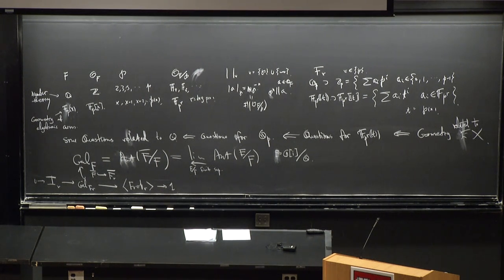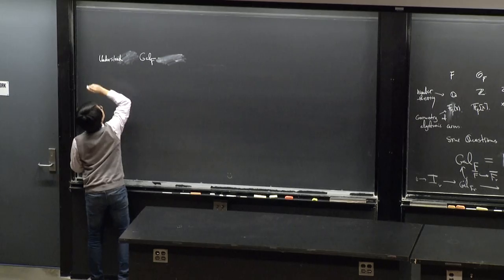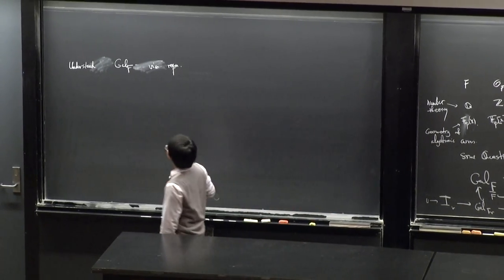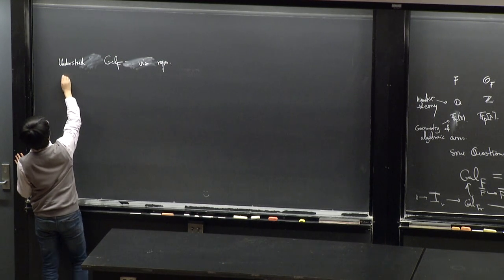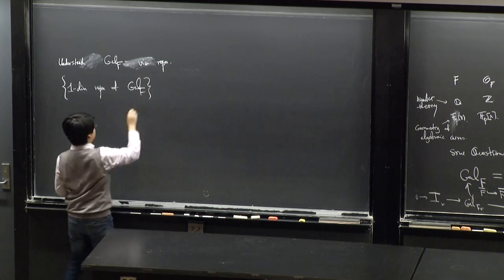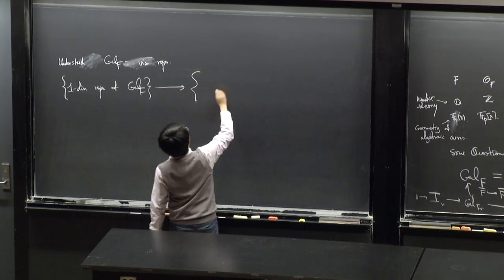One way to study these topological groups is to understand them by representations — we want to study the representations of the Galois group. For one-dimensional representations, we basically understand this pretty well; it's the classical story of class field theory, essentially the same as understanding characters.